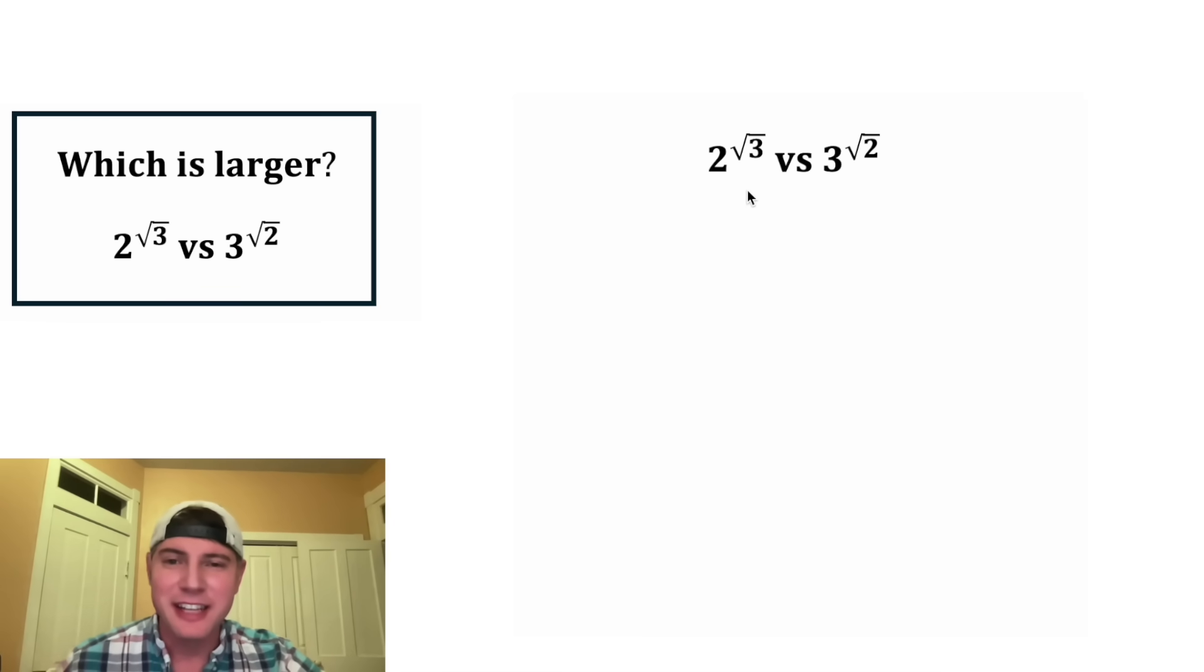So we could just plug this into a calculator and get the decimal approximations, but I wanna see if we can do it without a calculator. I have no idea how to evaluate something with a radical exponent. So let's see if we can get rid of some of these radicals.